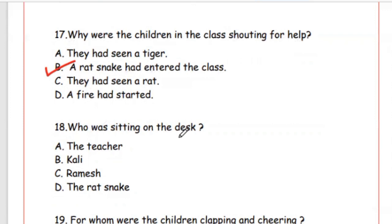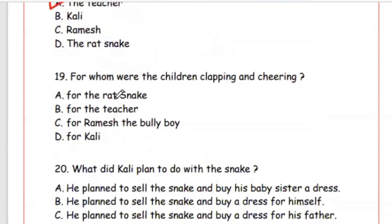Question 18: Who was sitting on the desk? Question 19: For whom were the children clapping and cheering? The answer is for Kali, Option D. Question 20: What did Kali plan to do with the snake? He planned to sell the snake and buy his baby sister a dress — Option A.